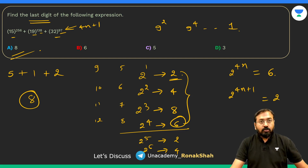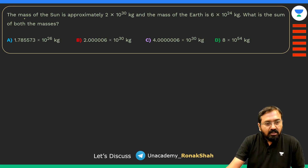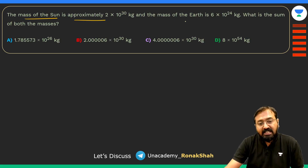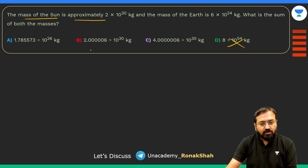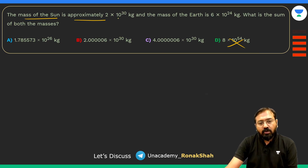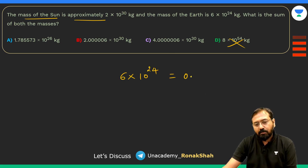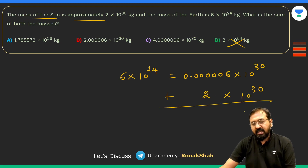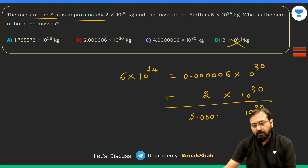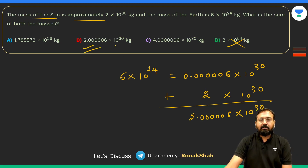The mass of the sun is approximately 2 × 10³⁰ kg and the mass of the earth is 6 × 10²⁴ kg. To find their sum, convert to the same power: 6 × 10²⁴ = 0.0006 × 10³⁰. So the sum is (2 + 0.0006) × 10³⁰ = 2.0006 × 10³⁰. That matches option B.